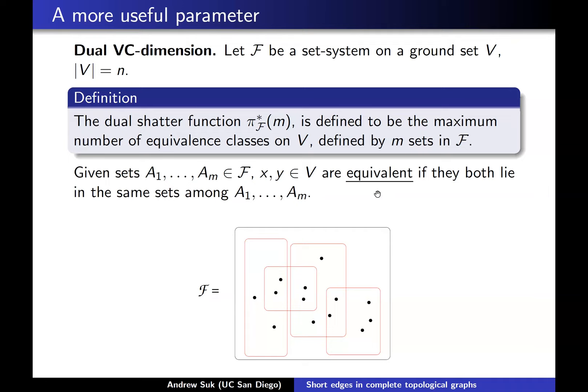If you look at any m sets in your family, these m sets partition the vertex set into equivalence classes where two vertices are equivalent if they lie in exactly the same sets among A_1 through A_m. So these are basically the cells of the Venn diagram among m sets, and the maximum number of cells you get among any m sets is precisely the dual shatter function. As you can see, if you have geometry — for example points in the plane and your sets are rectangular boxes — then m boxes will partition the plane into m² regions, so the dual shatter function is very well behaved.